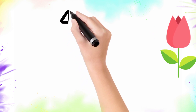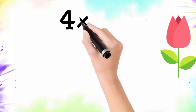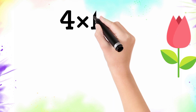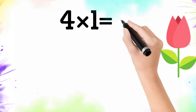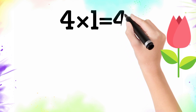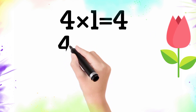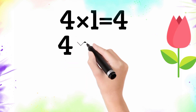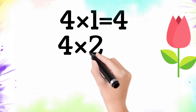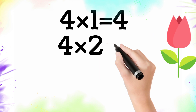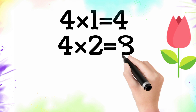So let's go. Four multiply by one is equal to four, so four times one is four. Four multiply by two is equal to eight, so four times two is eight.